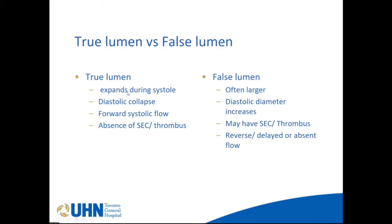The true lumen expands during systole and has diastolic collapse, with forward systolic flow on Doppler — a good systolic waveform — and absence of secondary thrombus. The false lumen is often larger, its diastolic diameter increases, may have a thrombus in it, and shows reverse, delayed, or absent flow on Doppler.